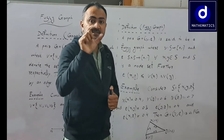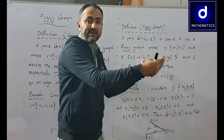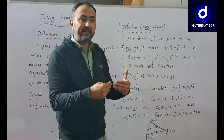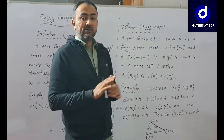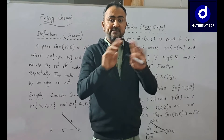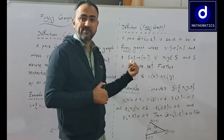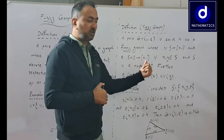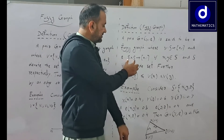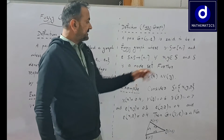E shows how much two vertices are related. We are not discussing absolute cases of whether two vertices are related or not, but rather how much two nodes are connected — on a scale of zero to one. This mapping E from S × S to [0,1] gives us the strength of relation between two vertices, where S denotes the node set or vertex set.